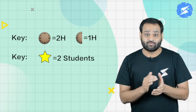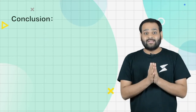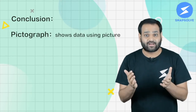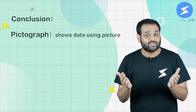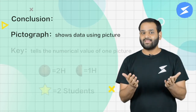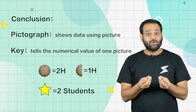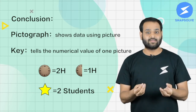The key of a pictograph is very important and we generally misinterpret it, so we need to carefully read the key. When you represent data in this way, we call it a pictograph — it is a pictorial representation of data using symbols and pictures. The key of the pictograph is the numerical value that one symbol or picture represents. I hope you understood the concept — keep learning!